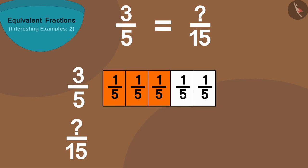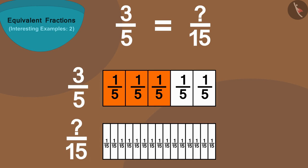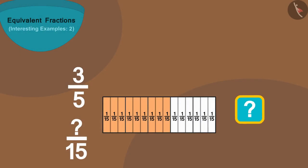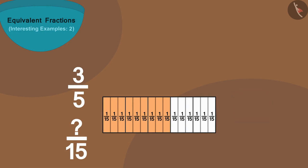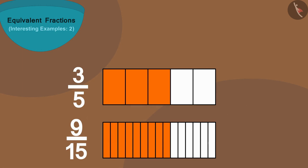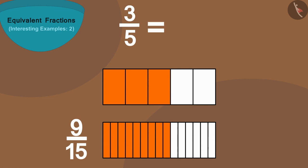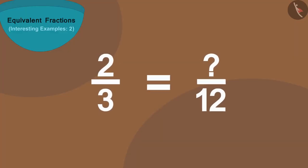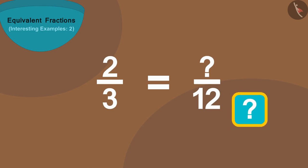Let us make a strip of equal length just below it and divide it into 15 equal parts. Now if we put this strip on top of the first strip, we will find that 15 parts of this strip are equal to five parts of the first strip. Can you now tell how many parts out of 15 are equal to the three colored parts of the first strip? Yes — nine parts! In this way three by five is equal to nine by 15.